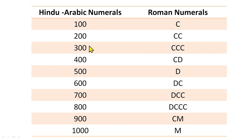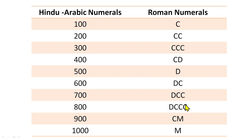Now for 100 to 1000: 100 is C, 200 is CC, 300 is CCC. 400 can't be four C's, so we take help from 500 (D): D−100 = 400, giving CD. 600 is DC, 700 is DCC, 800 is DCCC. For 900, we can't write four C's, so we take help from 1000 (M): M−100 = 900, giving CM. And 1000 is M.